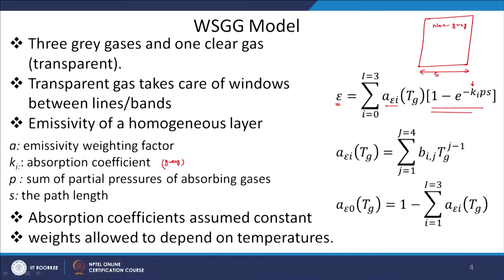The main assumption in this method is that the absorption coefficient is independent of temperature and gas concentration. So the value of the absorption coefficient is assumed to be constant, while the weights are allowed to vary with temperature. This is restrictive: if we have two cells — one at temperature T1 and another at T2 — the absorption coefficient K_i for the gray gas will be the same regardless of temperature. But the weights A_i can change — A_i will be based on T1 for one cell and T2 for the other.